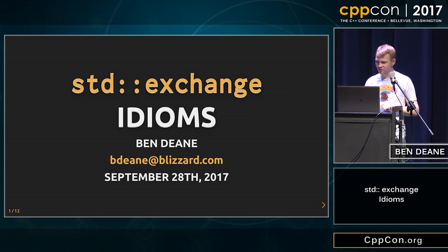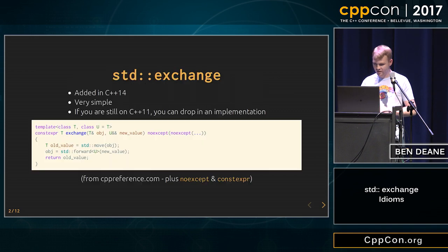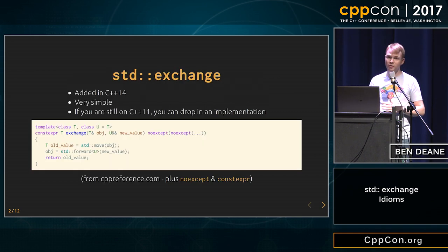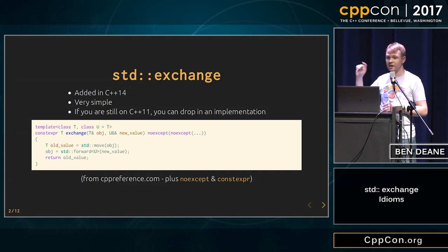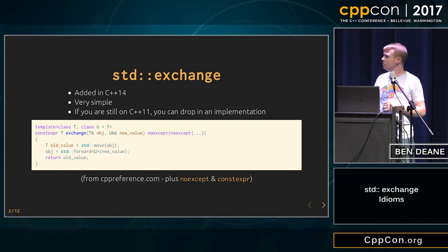std::exchange is a little thing that got added in C++14. But if you're still on C++11, you can easily drop it into your own codebase. It looks like this — I added the constexpr and noexcept. You probably can't use constexpr if you're on C++11.